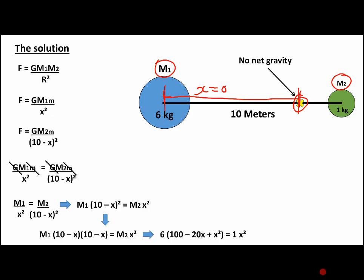Now we put the masses in. So we now have the 6 and the 1. So we end up with 6 times minus 20X plus X squared equals 1 times X squared.